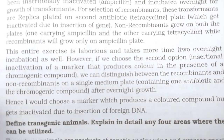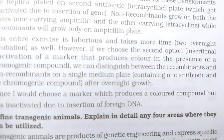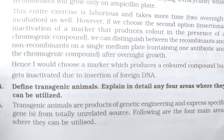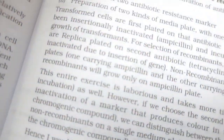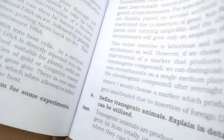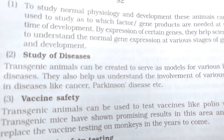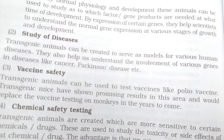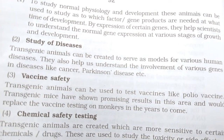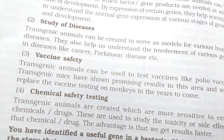Define transgenic animals and explain in detail any four areas where they can be utilized. The answer covers: study of diseases, vaccine safety, and chemical safety testing, among other areas.